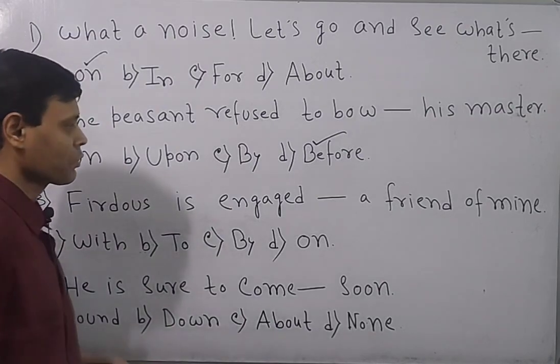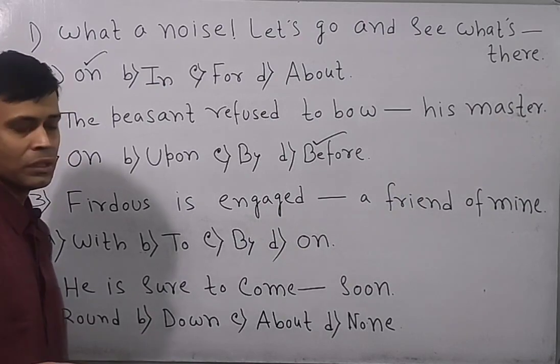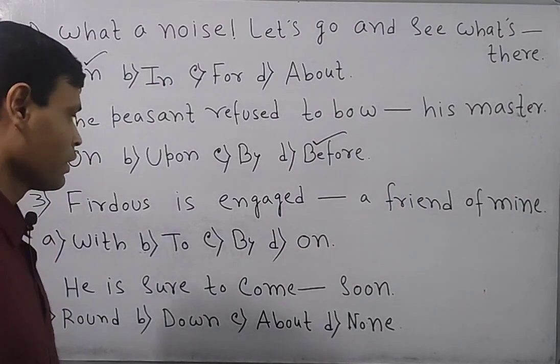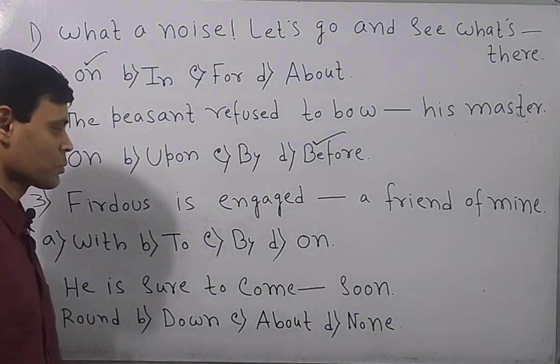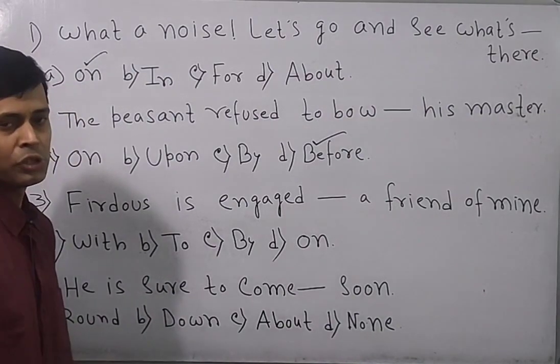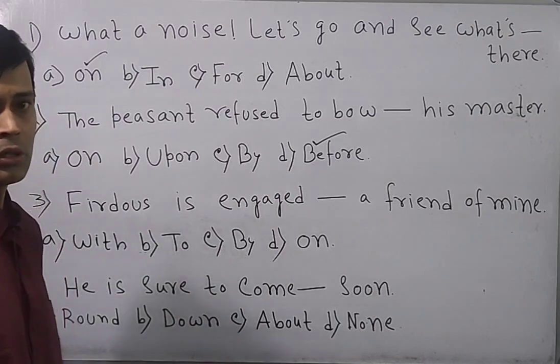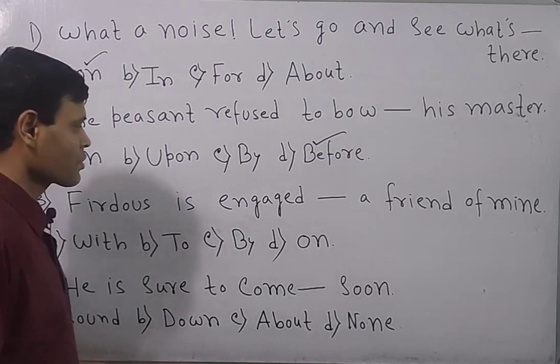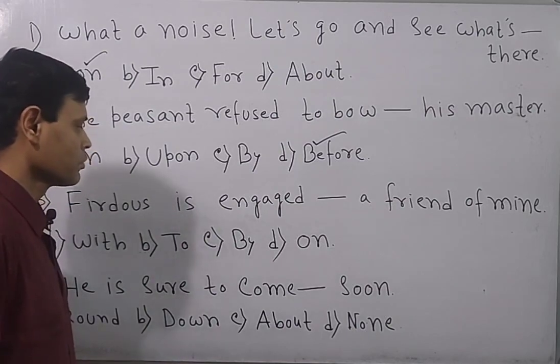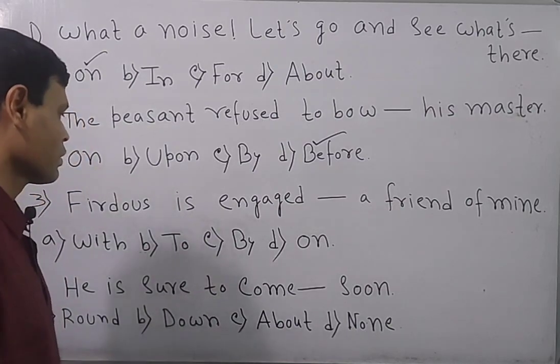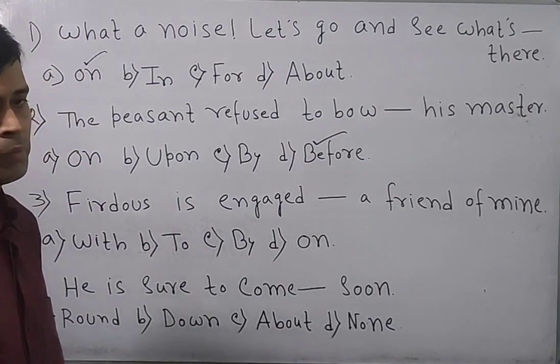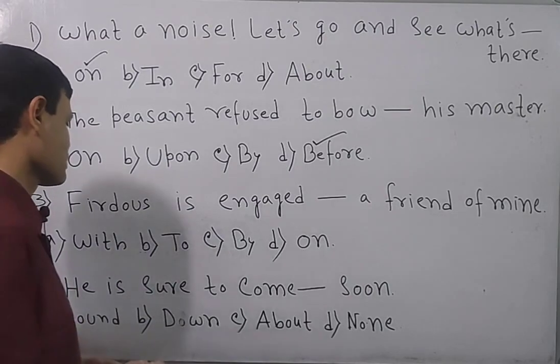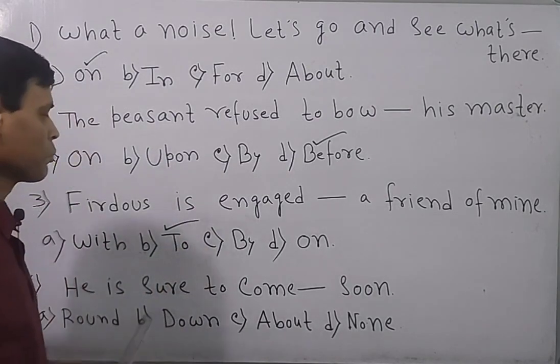Whenever such a question is there as this, you need to select the preposition to. Engaged to someone. It is not like engaged with or engaged by or engaged on. It should be engaged to someone. So, the answer is to, that means option B.